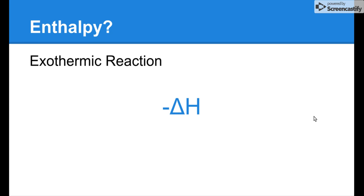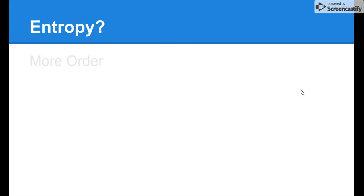Hopefully you wrote negative delta H on your paper. For exothermic reactions, exothermic means heat energy is going out, so we are losing heat energy — which is why it's a negative delta H. For this next one, we're looking for entropy, not enthalpy. What is the sign for entropy if there is more order? The answer is negative delta S — less disorder means negative delta S.